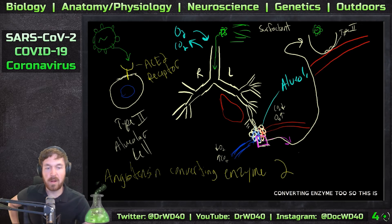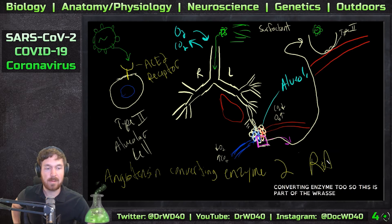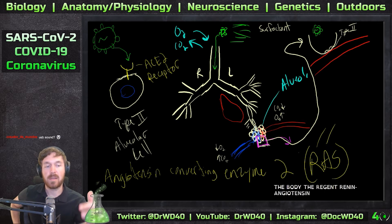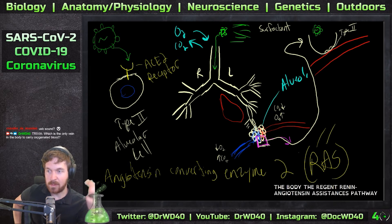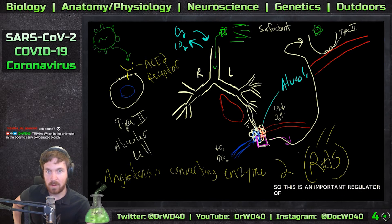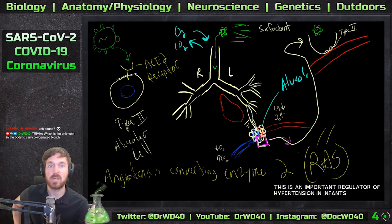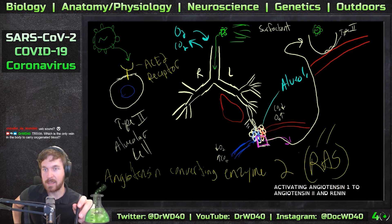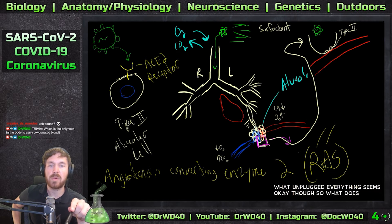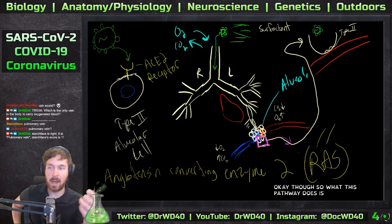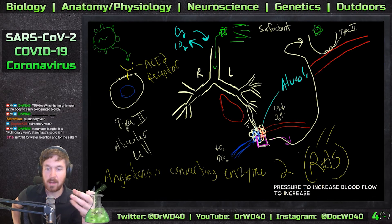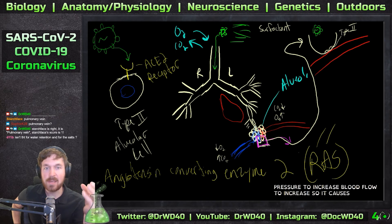This is part of the RAS pathway in the body - the renin-angiotensin synthesis pathway. This is an important regulator of hypertension and inflammation, activating angiotensin 1 to angiotensin 2 and renin at the kidney. What this pathway does is activate the system and cause blood pressure to increase, blood flow to increase - it causes vasodilation, which opens up the blood flow.